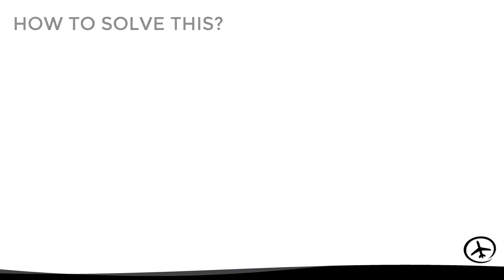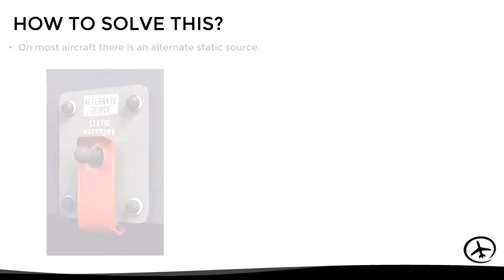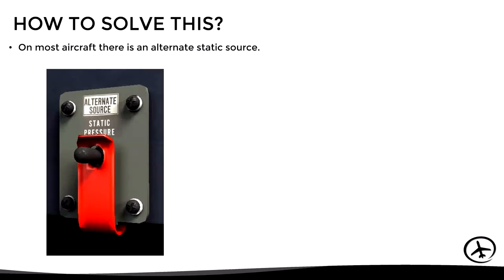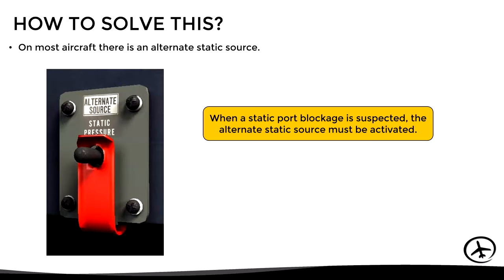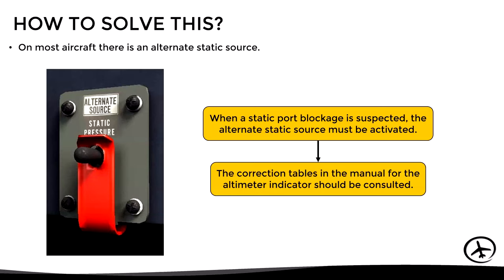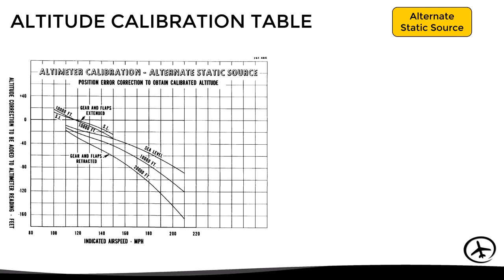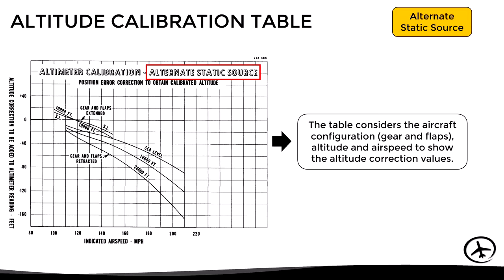To solve this situation, in most aircraft there is an alternate static source which can be activated from the cockpit using a switch. When using this alternate source, the pilot must consult the corresponding altitude calibration table, since the static pressure sensed by the alternate source is slightly different from the normal source. An example of an alternate static source altitude calibration table is used the same way as a regular calibration table.